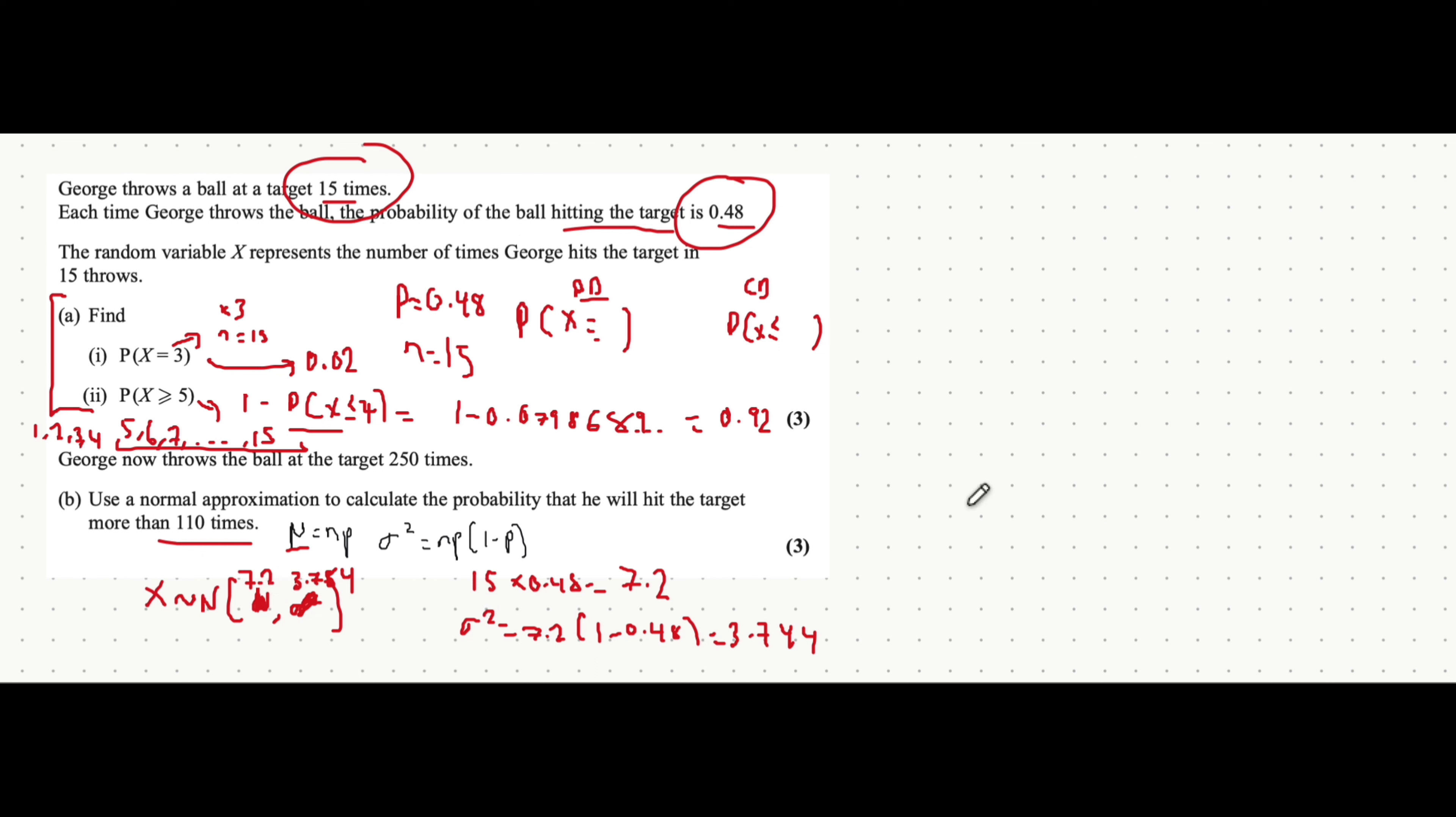So more than 110 times, we don't just take bigger than 110. Because there's something called a continuity correction when you use the normal approximation. What we do is, when it's a greater than, we take greater than the upper bound. But if you were finding less than, you take less than the lower bound. Note that you don't have to do greater than or equal to or less than or equal to with a normal distribution. Because it's a continuous distribution.